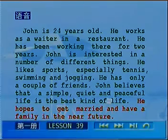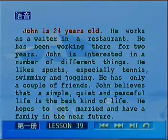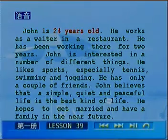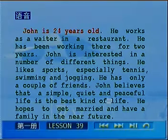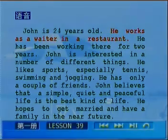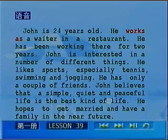我们先来看一下第一句：John is 24 years old. 那么在这一句当中有两处可以连读。John is 24 years old. 那么读一下：John is 24 years old. 下面，he works as a waiter in a restaurant. 我们可以连读成：he works as a...